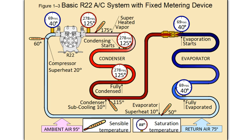We have superheated, high-pressure, high-temperature vapor leaving the compressor at the beginning part of the condensing unit. That high-pressure, high-temperature superheated vapor is desuperheated once it hits the saturation point at 125 degrees, and condensing begins.